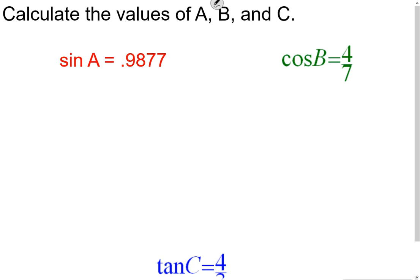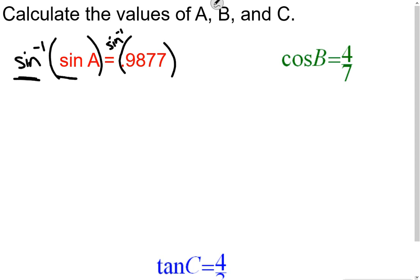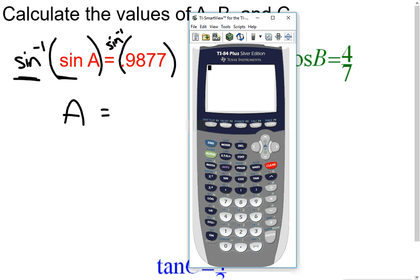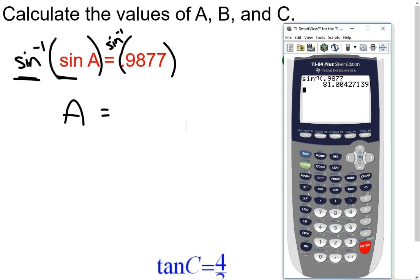To undo the sine, we use the inverse of sine. We take the inverse of sine on both sides — the inverse of sine and sine cancel each other out, leaving just A on the left side. On the right side, we use our calculator: push second, then sine, then type in 0.9877 and push enter. We find the measure of angle A is 81.00 degrees.